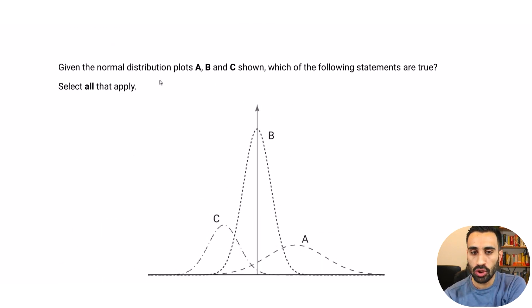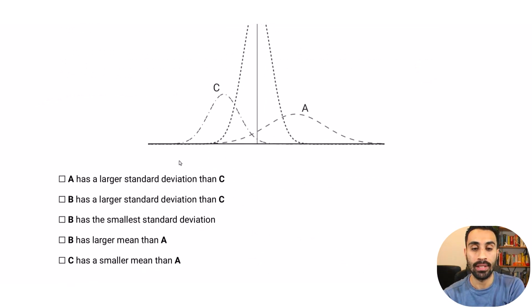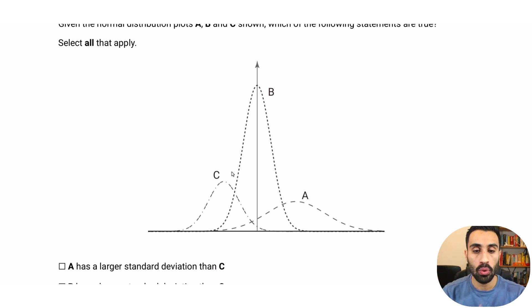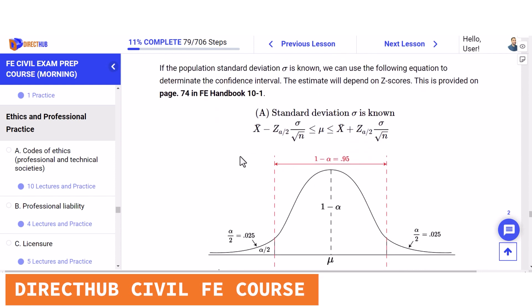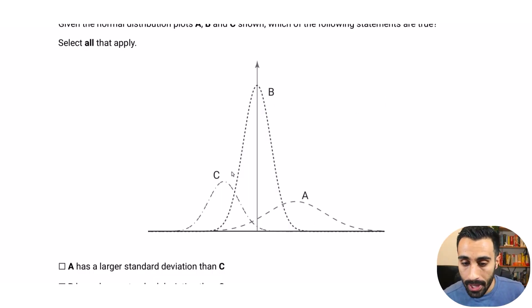Given these normal distribution plots A, B, and C, which of the following statements are true? Select all that apply. This is very important — we must know normal distribution for all FE disciplines, whether it's a calculation-based question or a conceptual one like this. In my Civil FE review course I cover all of these concepts: calculation-based, how to use the calculator, and more. Check out the link below if you're interested. Now let's solve this.